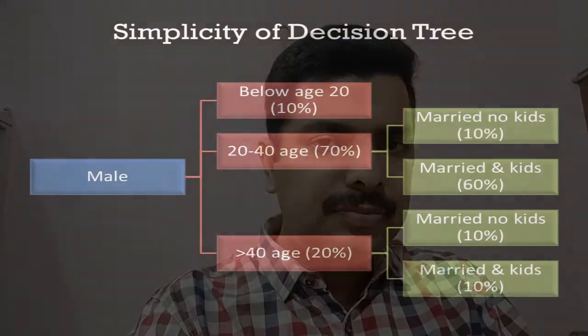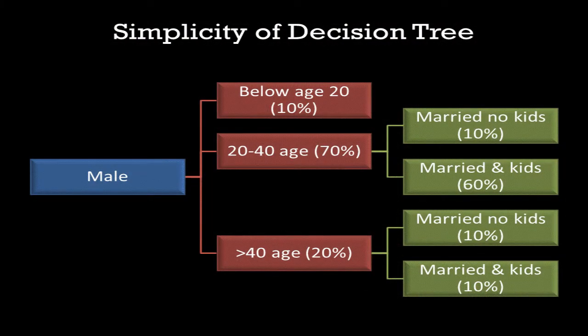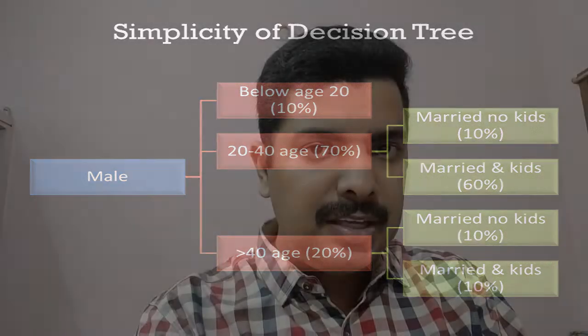With this analysis, you understand one thing: the major chunk of people is married and having kids of age range 20 to 40 years. So you're supposed to target them.